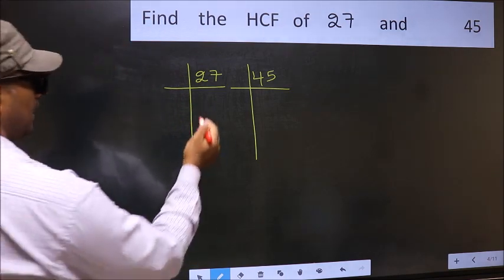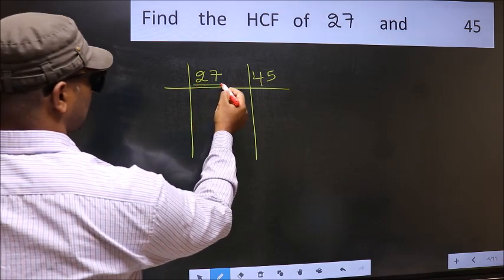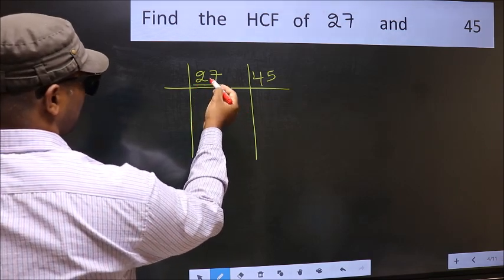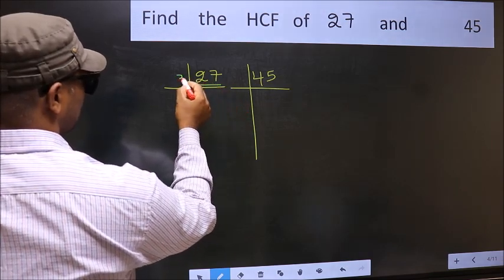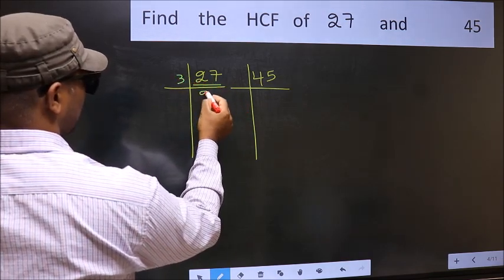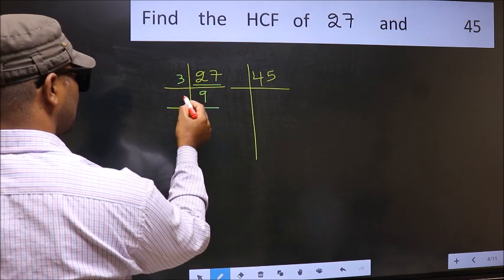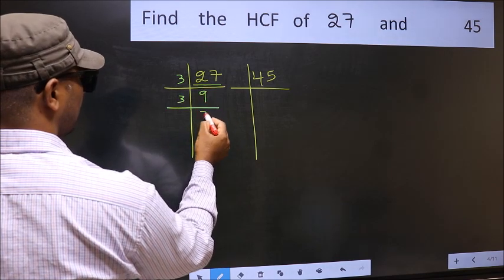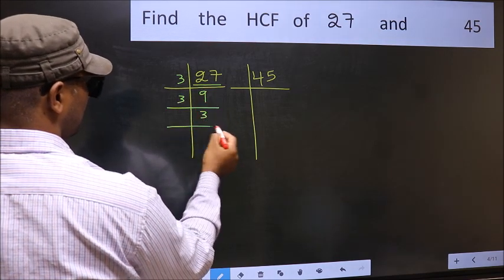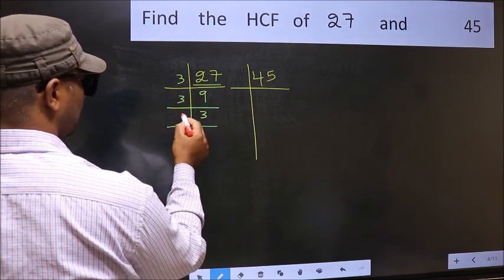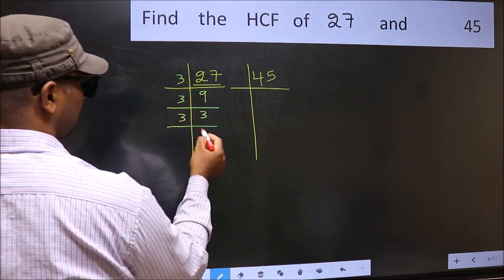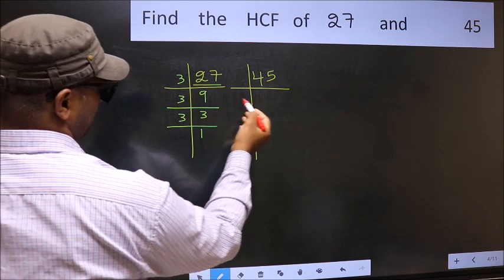Here we have 27. 27 is 3 nines — 27. 9 is 3 threes — 9. 3 is a prime number, so 3 ones — 3.